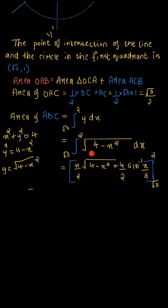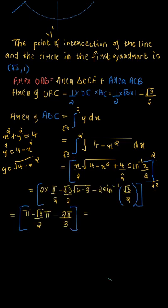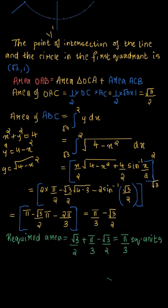Using the formula for the integral of root(a square minus x square), with a equal to 2, we get x by 2 into root(4 minus x square) plus 4 by 2 into sin inverse(x by 2), evaluated from root 3 to 2. This gives pi minus root 3 by 2 into pi minus 2 pi by 3, which equals pi by 3 minus root 3 by 2. Therefore, the required area equals root 3 by 2 plus pi by 3 minus root 3 by 2, which equals pi by 3 square units.